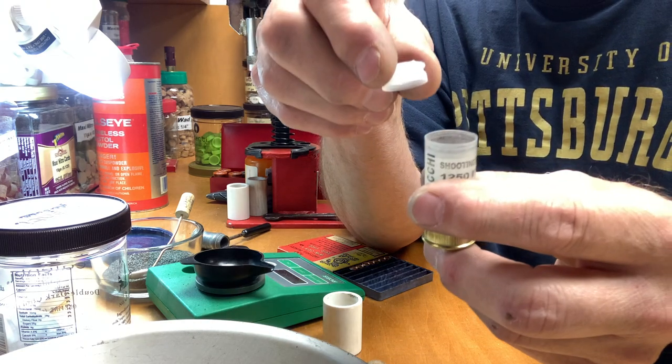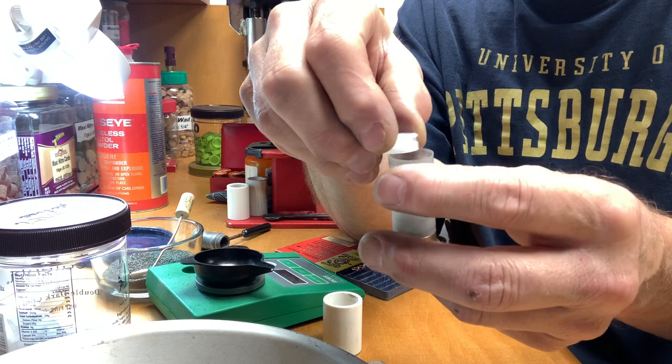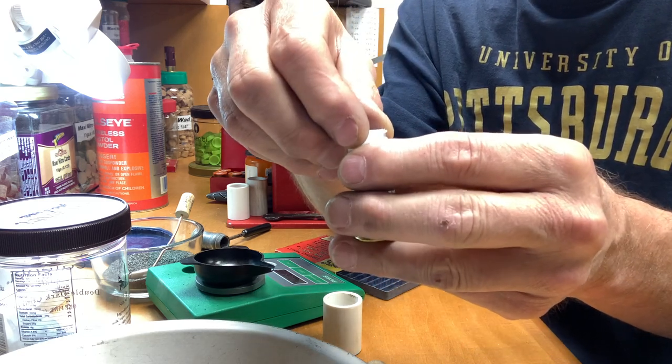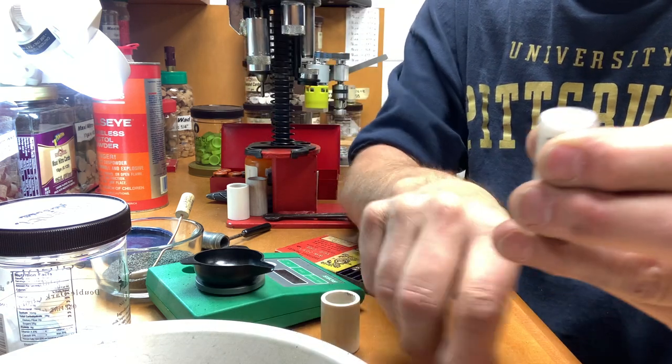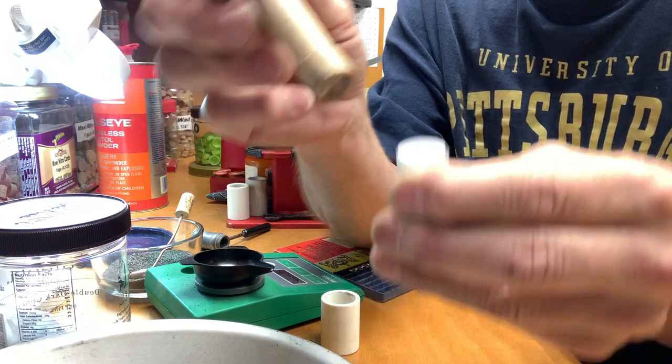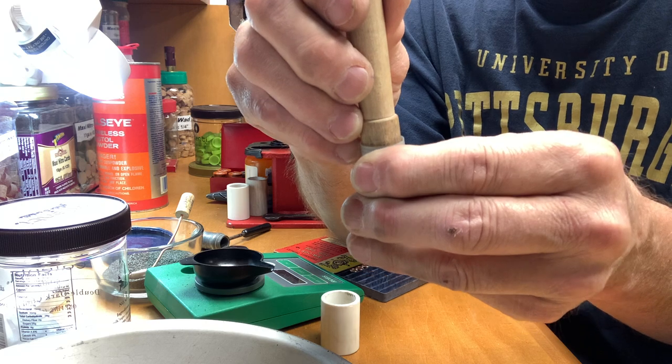You have to actually like pinch the hull a little wee bit, get that thing started in there. Then you got to take a little plunger like this. You got to keep pressure squeezing the hull so when you put that gas seal down in there it doesn't roll over on you.